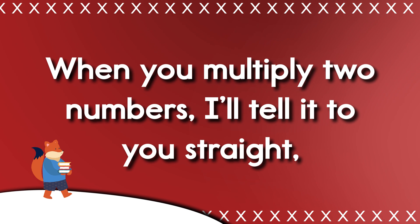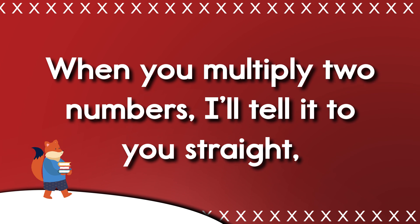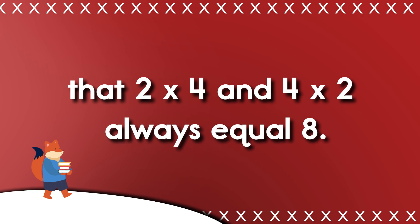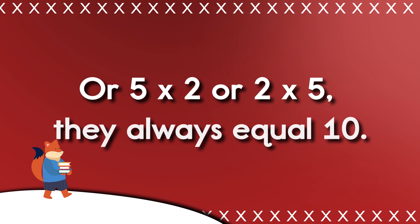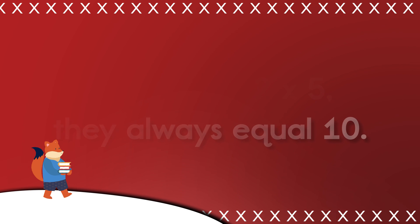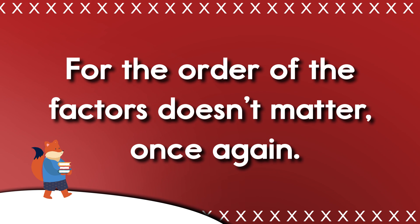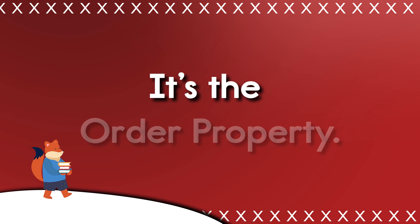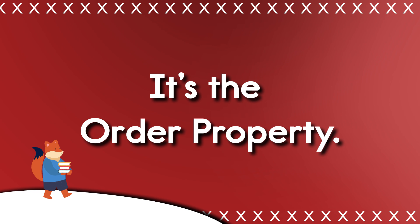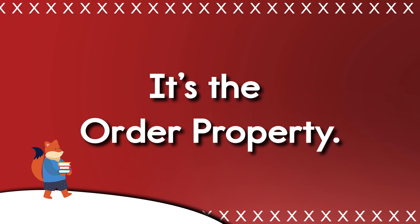When you multiply two numbers, I'll tell it to you straight: that 2 times 4 and 4 times 2 always equal 8. Or 5 times 2, or 2 times 5 — they always equal 10. For the order of the factors doesn't matter once again. It's the order property!